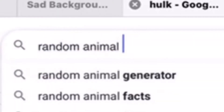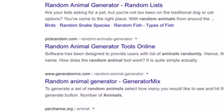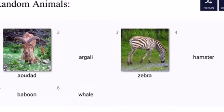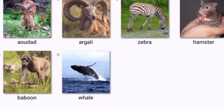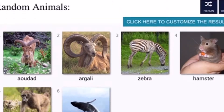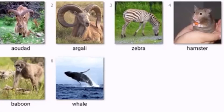Let's go to the random animal generator. Clicking on the site — it's a genuine site — we get our results. From the pictures I can tell there are some sort of ram species, probably Argali, along with zebra, hamster, baboon, and whale. Let's see how this mix stands out.